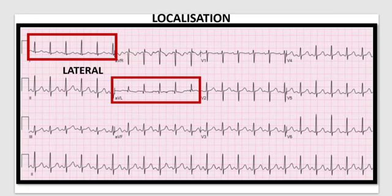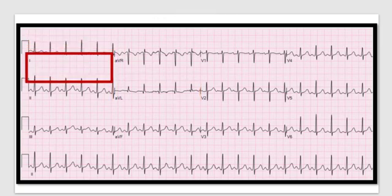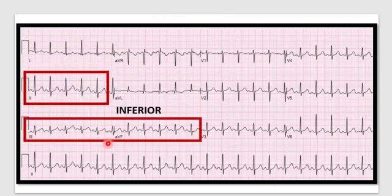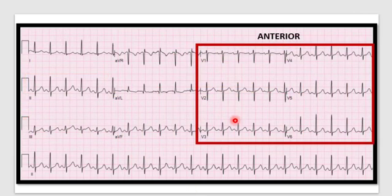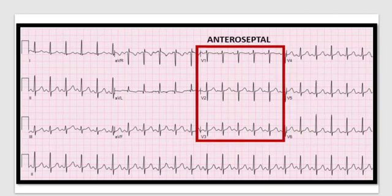For example, ECG changes in leads 1 and AVL represent the lateral part of the heart. Leads 2, 3, and AVF represent the inferior part. Leads V1 to V6 represent the anterior part, and if the changes are confined to V1 to V3 or V4, it represents the anteroseptal part of the heart.